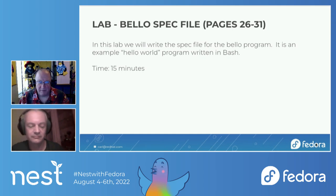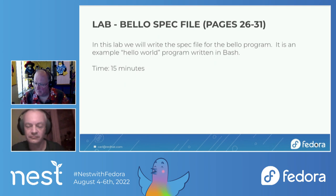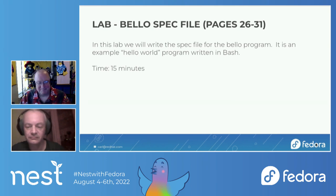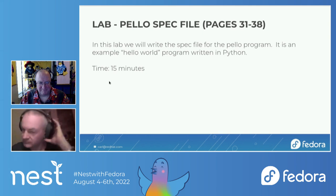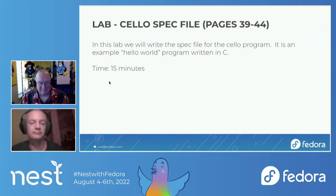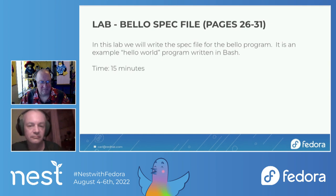Just to clarify: we are doing the bello with a B for bash, and cello with a C for C. The pillow Python example is the one we're going to skip. So everyone go through pages 26 to 31, follow those instructions in the PDF guide, and complete the bello spec file.